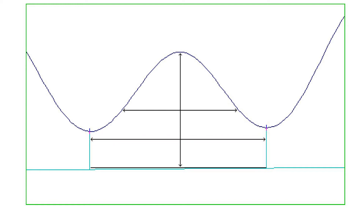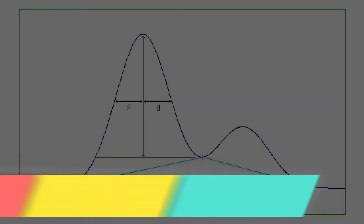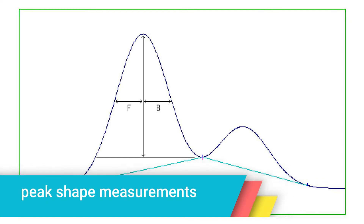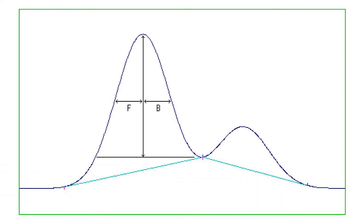Alternatively, the peak width may be estimated without reference to the chromatogram itself by calculating the ratio of the peak area to the peak height. Peak shape measurements. Chromatographers are frequently interested in the shape of peaks as an indicator of their column's performance. Most peak shape calculations are based on the front and back widths of the peak at particular fractional heights.